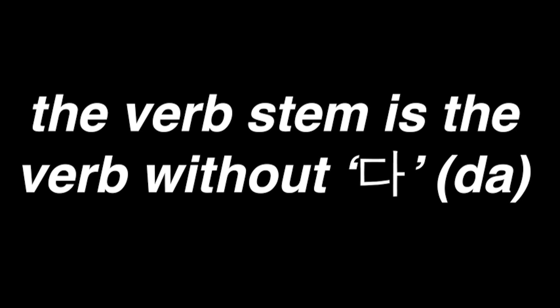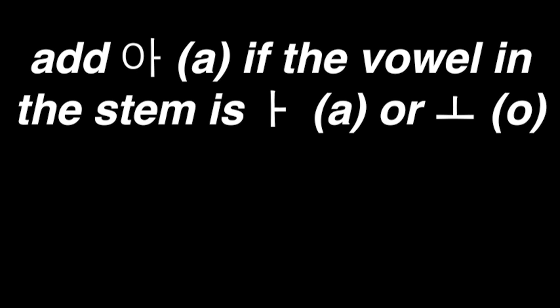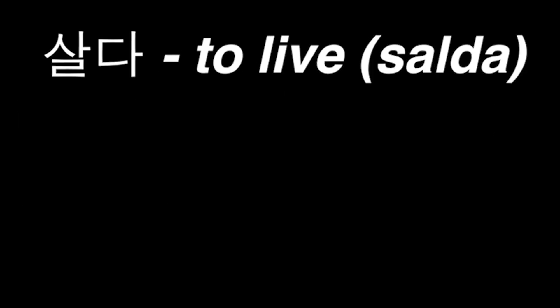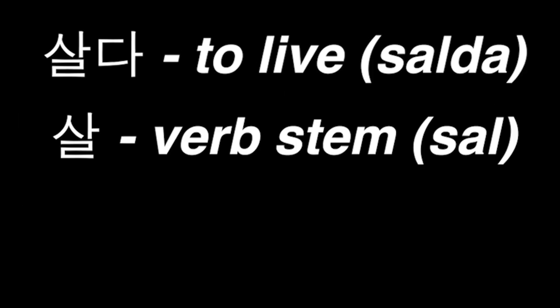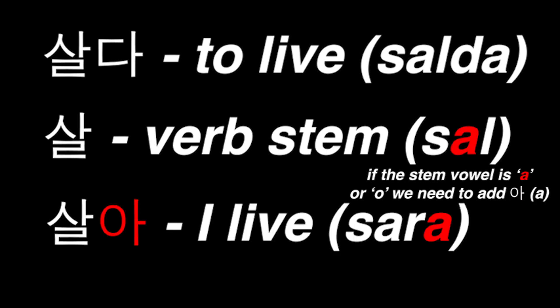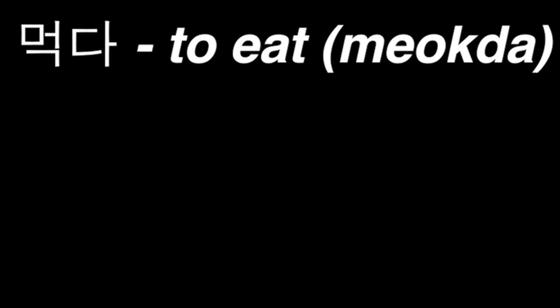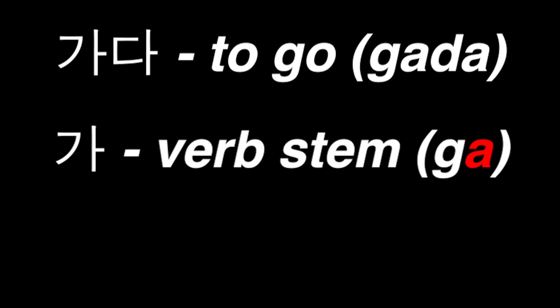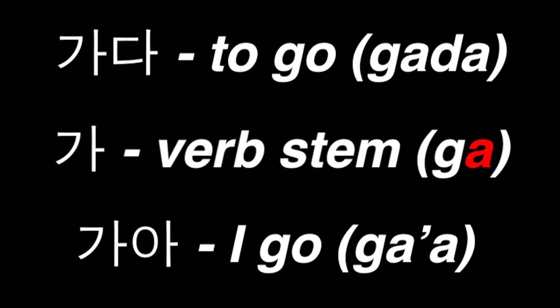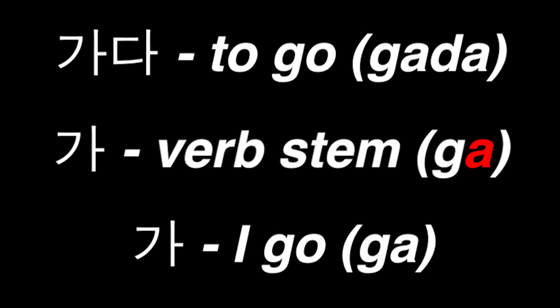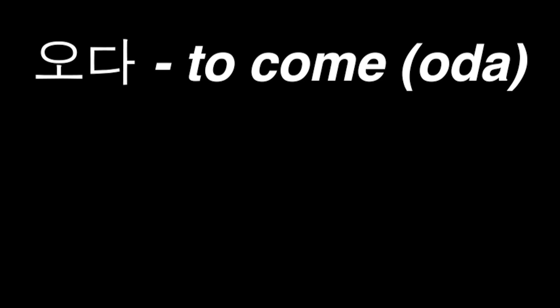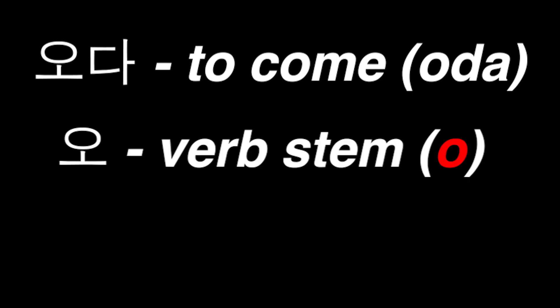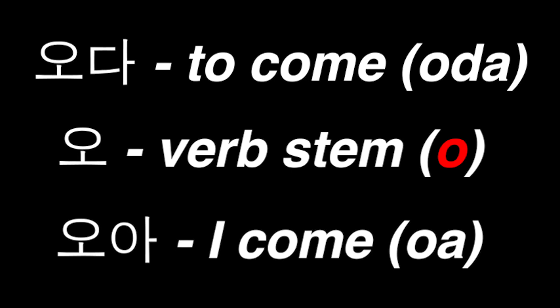To conjugate a verb, first find the verb stem by removing 다 from the dictionary form. Then add 아 if the stem vowel is 아 or 오, and add 어 if the stem vowel is anything else. For example, 살다 has the stem 살, and since the stem vowel is 아, we add 아, making 살아. For 먹다, which has the stem 먹, we add 어 because the stem vowel isn't 아 or 오. For 가다, to go, the stem is 가, and since the stem vowel is 아, we add 아, giving 가아, which simplifies to 가. Similarly, 오다, to come, gives the stem 오, and adding 아 gives 오아, which shortens to 와.